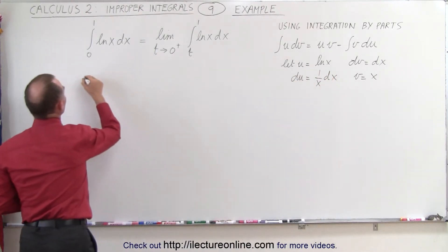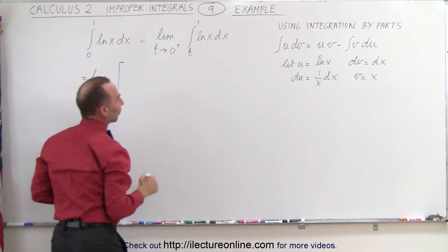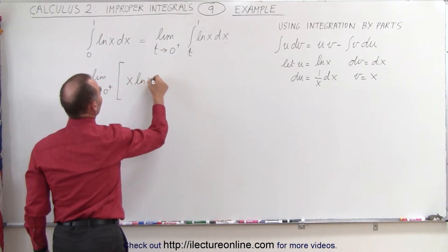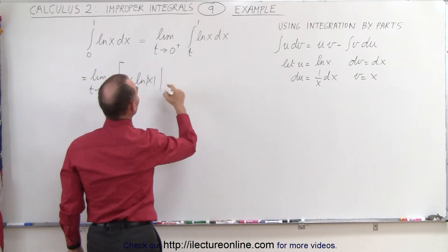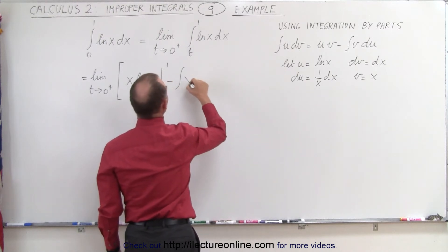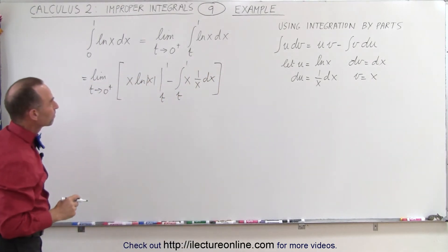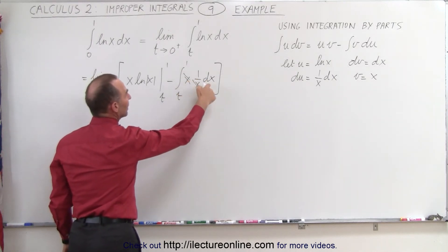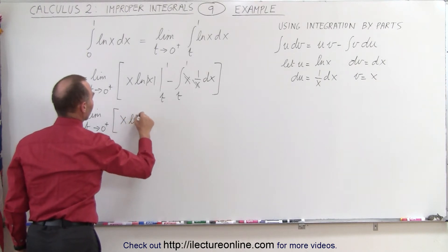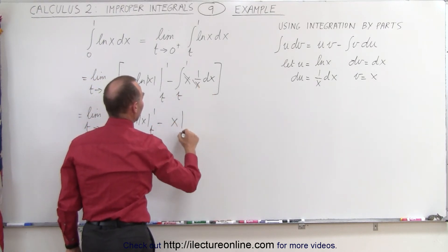When we implement that, this equals the limit as t goes to 0 from above of the following: we have u times v, writing v first, so x times the natural log of x, evaluated from t to 1, minus the integral of v du. Now v is x and du is 1 over x dx, integrated from t to 1. The x's cancel out, so we're simply integrating dx.